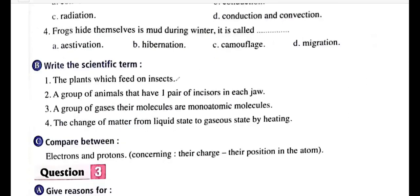Write the scientific term. A plant that feeds on insects — insectivorous plant. An animal that resembles a rabbit, like a gerbil — rodent. A group of gases whose molecules are monoatomic — noble gases, such as helium, neon, argon, krypton, xenon, and radon. A change of matter from liquid state into gaseous state by heating — evaporation.